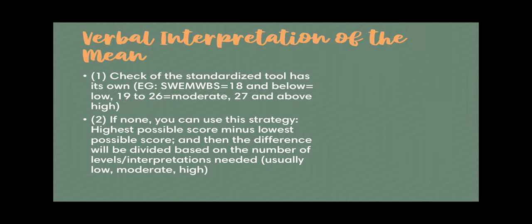Usually in the social sciences we make use of three levels: low, moderate, and high. You can use this strategy: get the highest possible score minus the lowest possible score, and then divide the difference by the number of levels or interpretations needed — usually three. So for example, you have a five-point Likert scale with seven statements. The lowest possible score is seven times one, which is seven. The highest score is seven times five, which is thirty-five. Subtract the lowest from the highest: thirty-five minus seven equals twenty-eight. Then divide twenty-eight by three, which equals approximately nine.